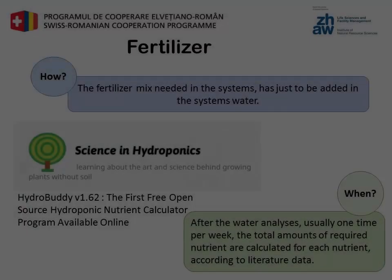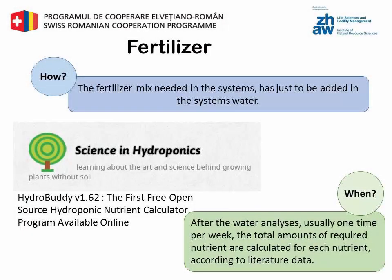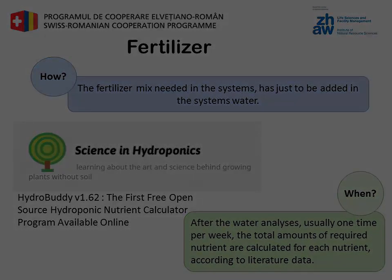The fertilizer mix needed in the systems can be added to the system's water. After weekly tests, you could use a program like Hydrobody to calculate the total amount of nutrients needed in the systems.